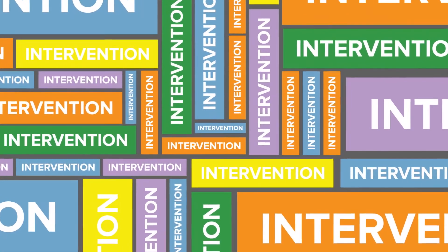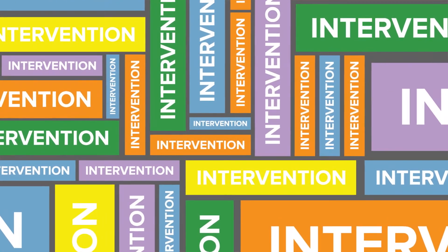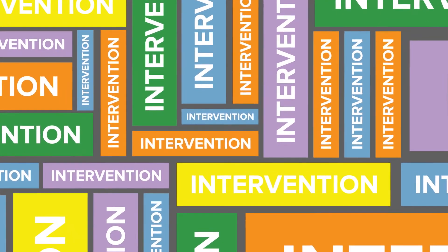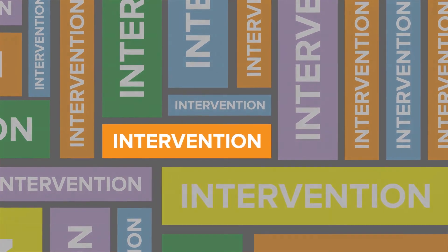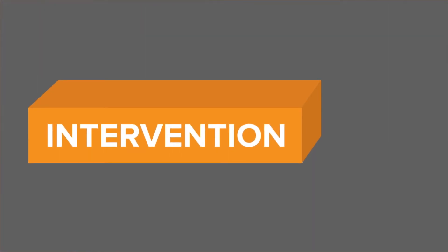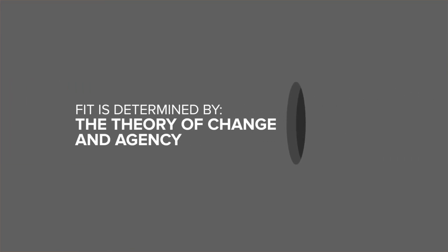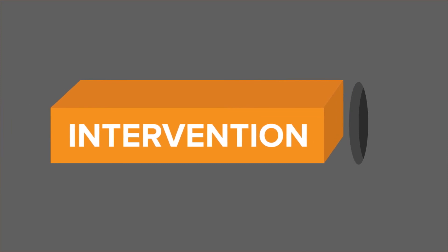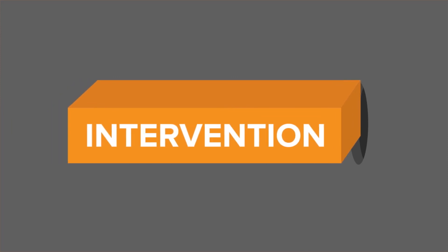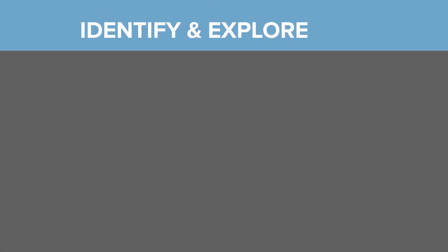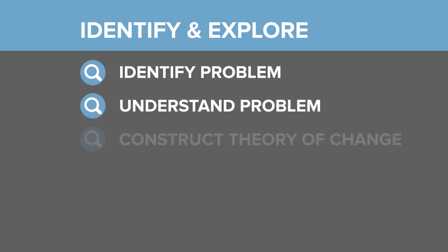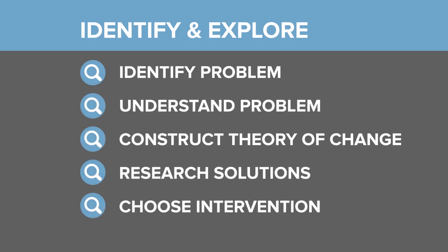Once you have a strong theory of change, it will help to narrow your search for possible interventions. The intervention must address the problem and also be appropriate for the characteristics and needs of the target population. It's also important to choose an intervention that fits your agency's capacity, budget, and political context. This is where the concern arises — if after this research the commissioner's intervention isn't the best fit, it could be difficult to convince her otherwise. But that's one reason why Identify and Explore is so helpful: if we take the time to identify and understand the problem, research possible solutions, and choose a good fit, we'll have a strong rationale to share with stakeholders.